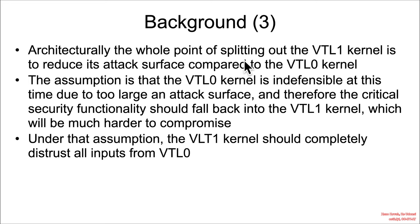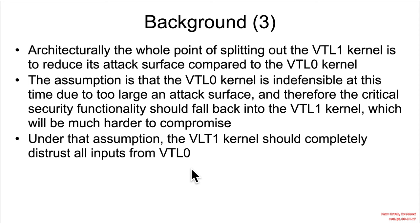Architecturally, the point of splitting the VTL1 kernel and VTL0 is to reduce the attack surface on VTL1. The normal Windows kernel is extremely large these days — basically indefensible, with millions and millions of lines of legacy code. Therefore, if you have truly security-critical functionality, it will be broken out and placed into the VTL1 kernel so that, with a much more reduced attack surface, it can handle that functionality and hopefully be less easy to break into. The VTL1 kernel should be distrusting everything, including inputs coming from the VTL0 kernel.